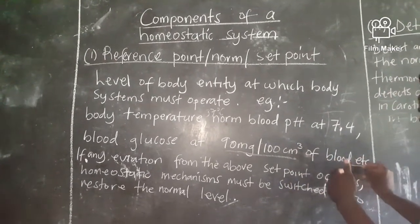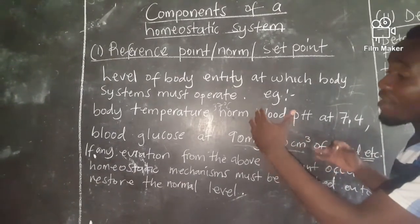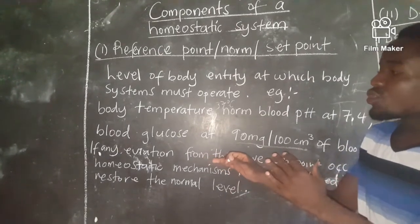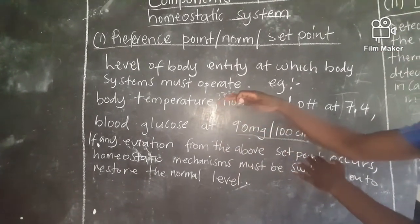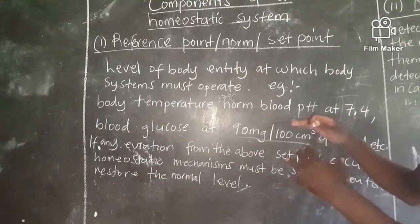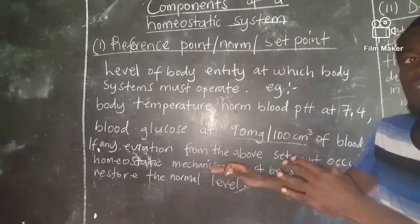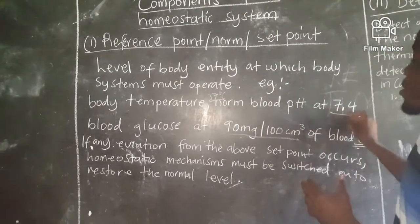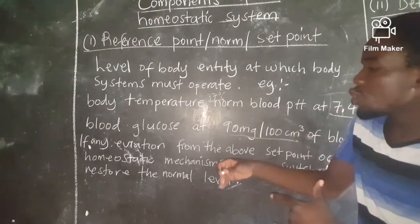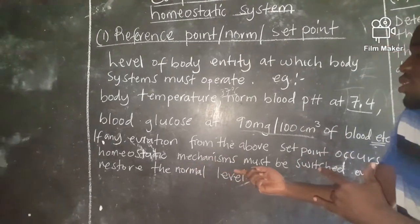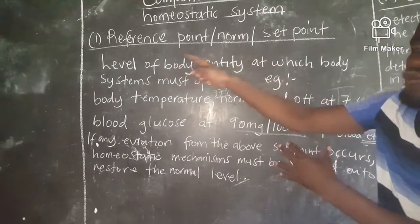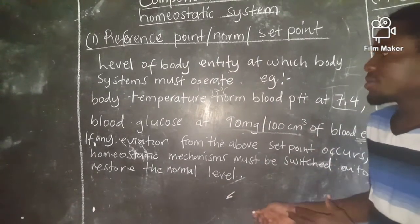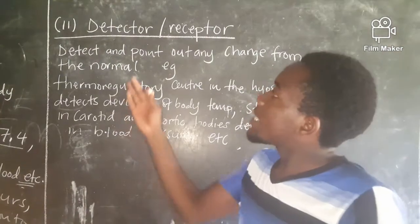We have other set points, but those are the main ones we've looked at. What we have to know is that any deviation — any change from the above set points — triggers a homeostatic mechanism, which is aimed at restoring the levels of these parameters.